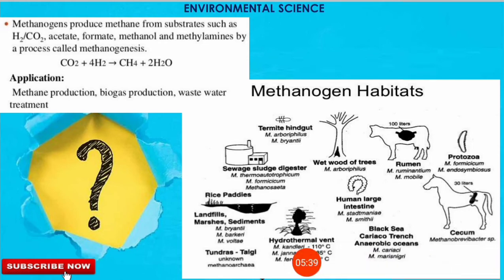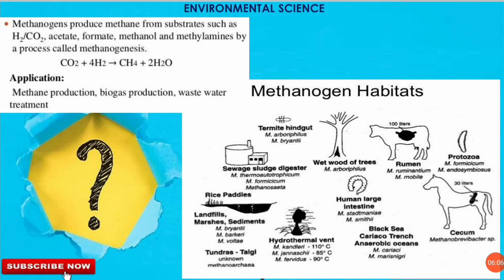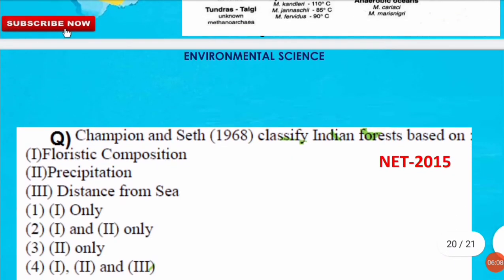Methanogens are found in various habitats: the rumens of cows and other herbivores, sludge and sewage digesters, the wet wood of trees such as M. arborophilus, the human large intestine, hydrothermal vents, and tundra and taiga regions.